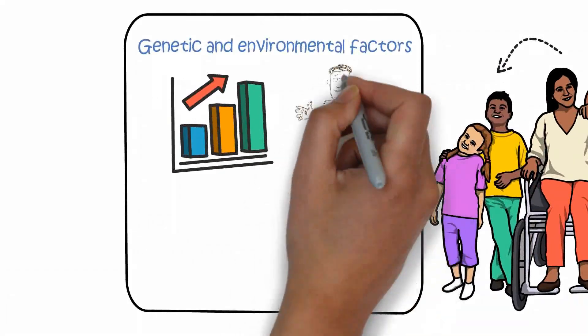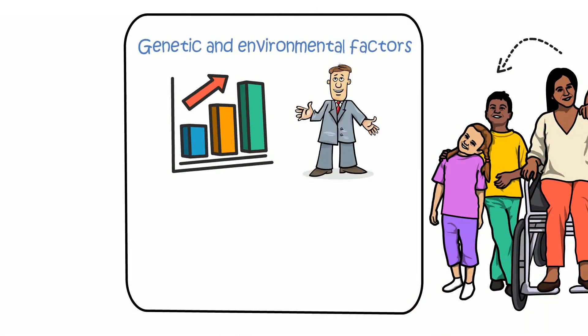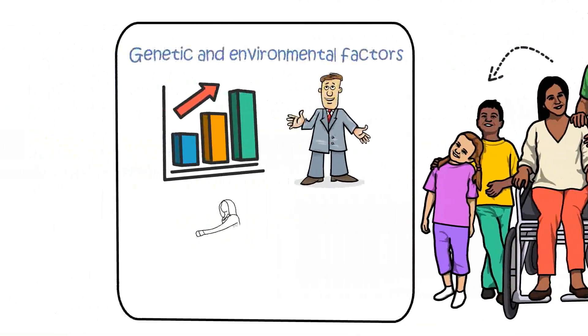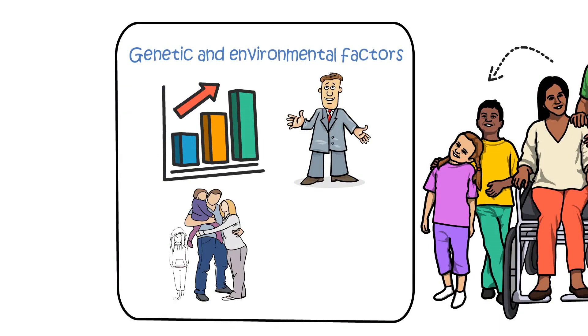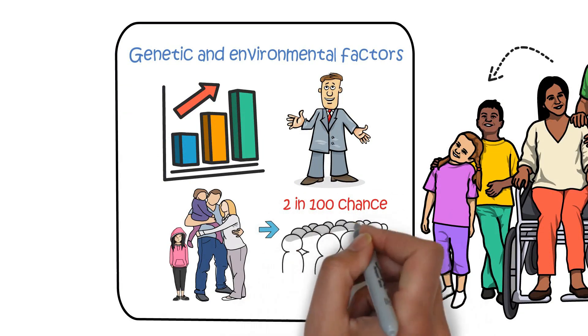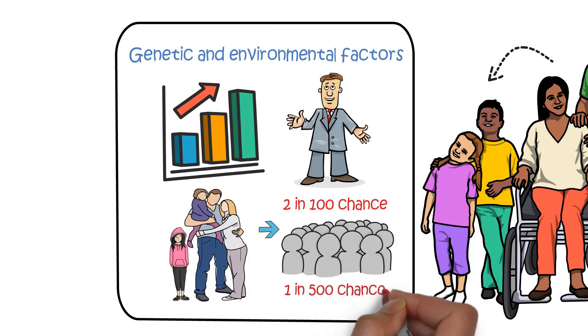It is not hereditary however, you have an increased chance of developing MS if you have a close relative with MS. For example, if your parents or siblings have MS then you have about 2 in 100 chance, compared to the general population who have a 1 in 500 chance of developing MS.